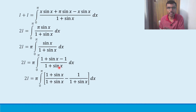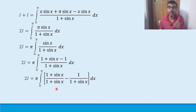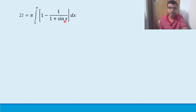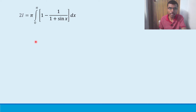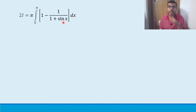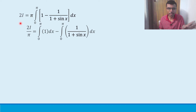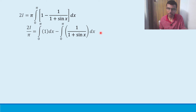The (1 + sin(x)) / (1 + sin(x)) terms cancel, giving: 2I = π · integral from 0 to π of [1 - 1/(1 + sin(x))] dx. Now integrate both terms separately. Bring π outside: 2I/π = integral from 0 to π of 1 dx minus integral from 0 to π of 1/(1 + sin(x)) dx.